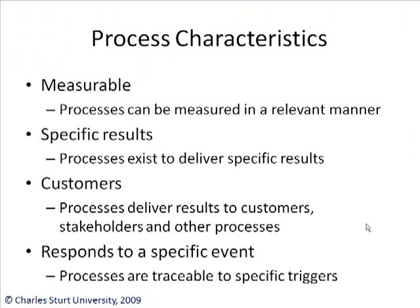Here are some process characteristics. First of all, processes should be measurable. Whatever you do within a process, you should be able to measure it in some shape or form — because if you can't measure it, it's probably not even worthwhile doing. Processes also deliver specific results — something comes out of that process box: it may be a car, a service, or a product. Processes have customers — they deliver results to customers, stakeholders, and other processes. The output of one process can be the input of another; for example, incident management may feed problem management, which may feed change management. So all these processes interface with each other.